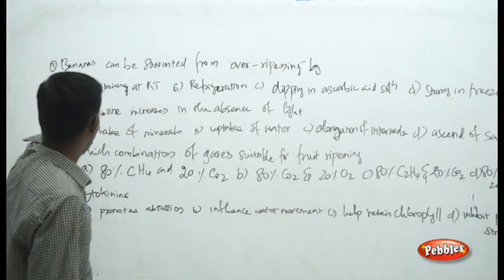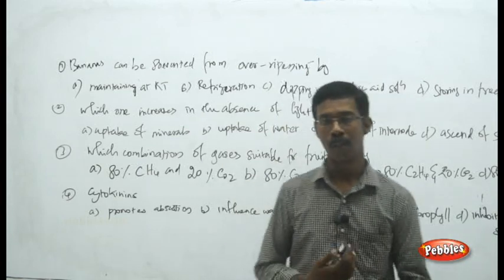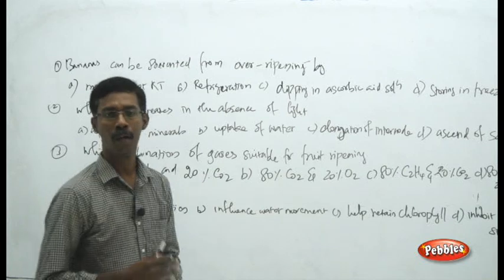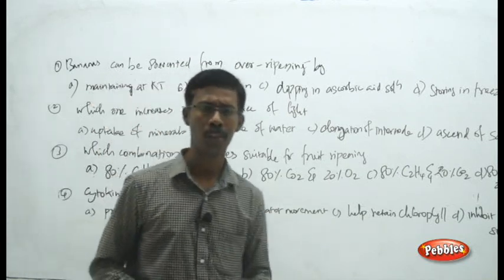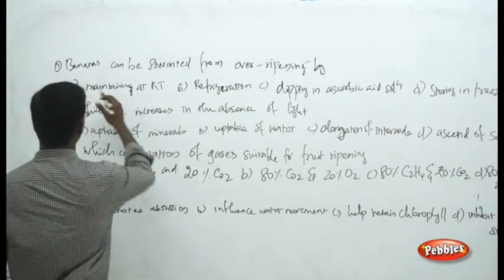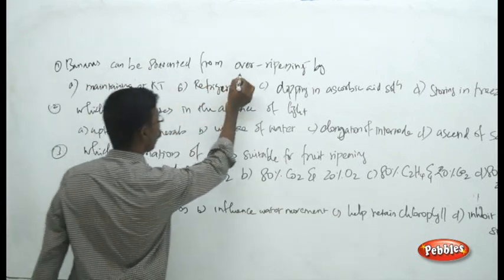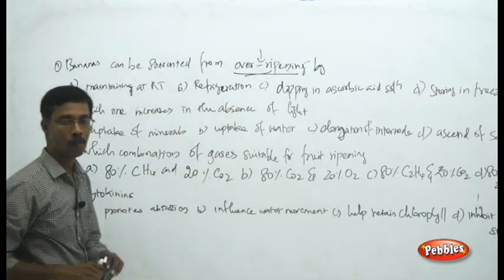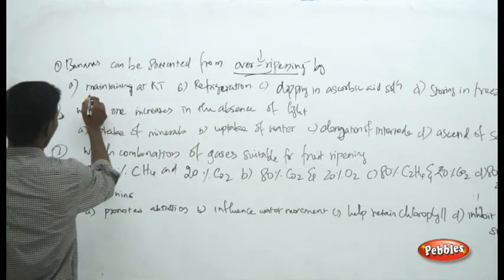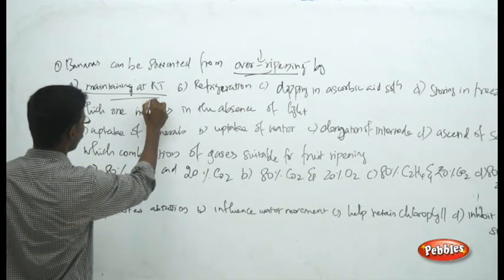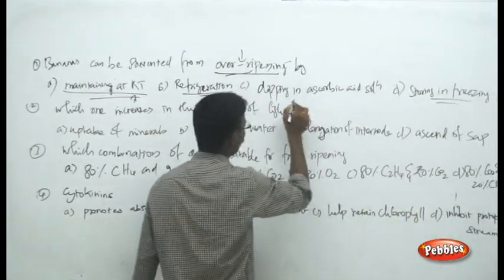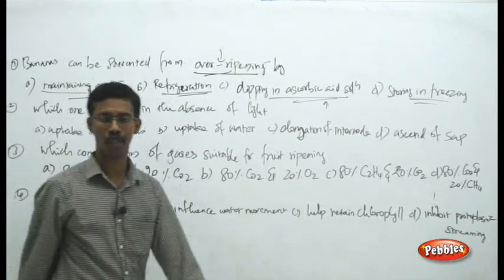Next question: bananas can be prevented from over-ripening. In the last section we saw how ripening happens with ethylene. Here the question is about preventing over-ripening — performing the opposite of what ethylene does. The choices are: maintaining at room temperature, refrigeration and freezing, and dipping in ascorbic acid solution.